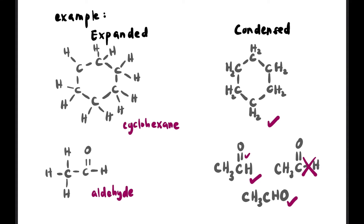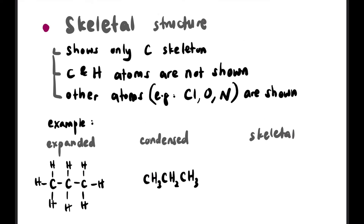For C=C double bonds, you cannot hide the double bond — it must be shown. But for C=O it's exceptional — you can write it without explicitly showing the double bond. To be safe, always show the double bond. Next: skeletal structure. In skeletal structure, we only show the carbon skeleton. C and H atoms are not shown, but any atom other than C and H must be shown.